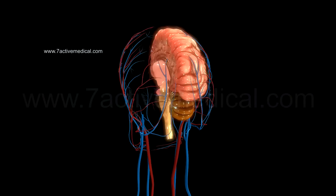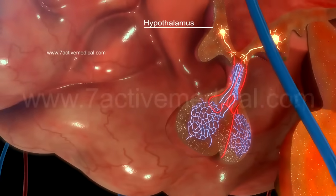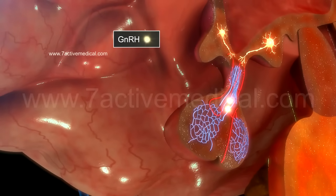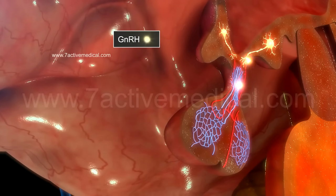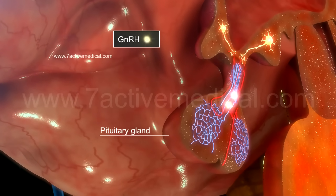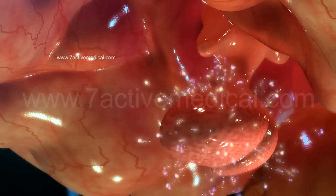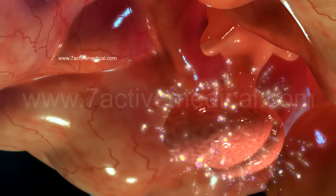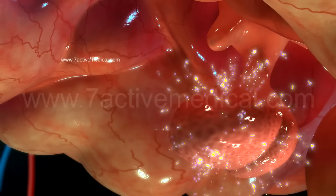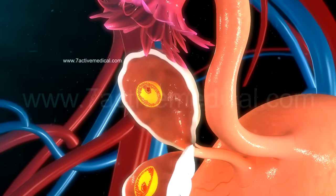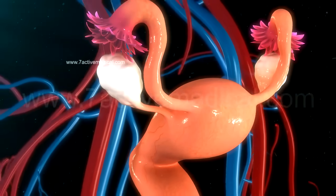At the start of a typical 28-day menstrual cycle, the hypothalamus secretes gonadotropin-releasing hormone, or GnRH, into the network of blood vessels which surround the pituitary gland. This stimulates the cells of the pituitary gland to secrete follicle-stimulating hormone, or FSH, which travels through the bloodstream to reach the ovaries, where it stimulates the development of ovarian follicles.